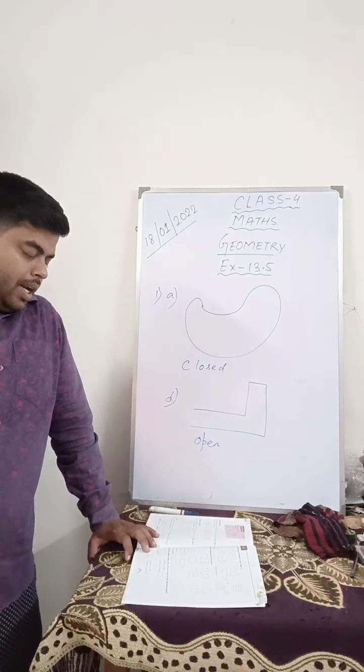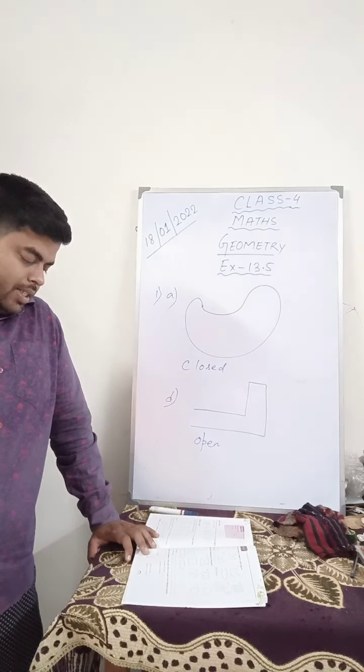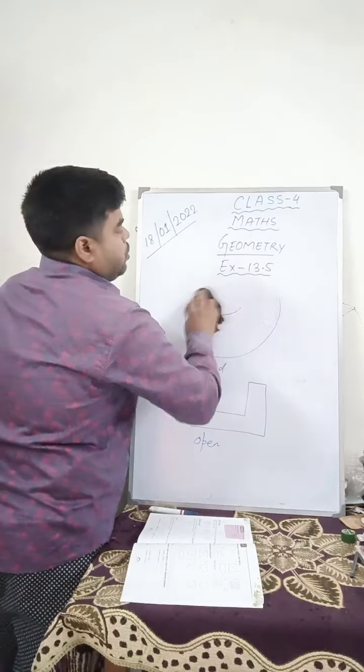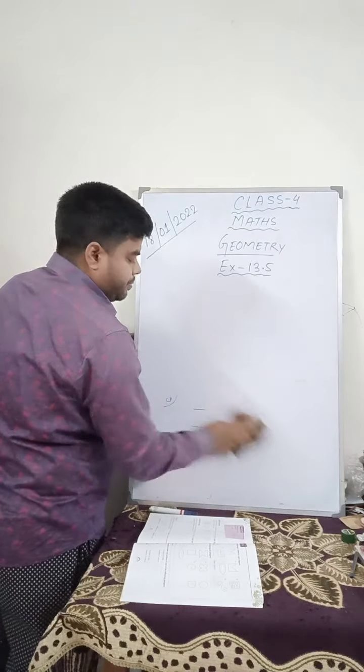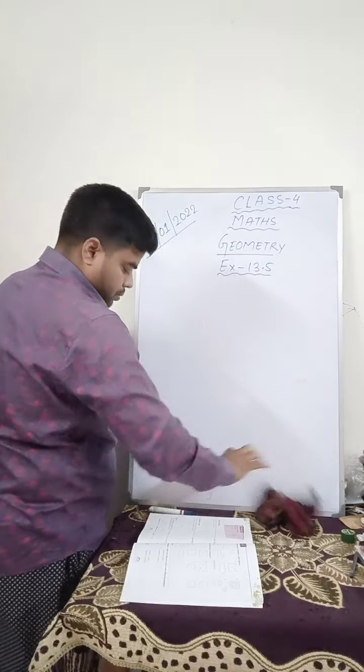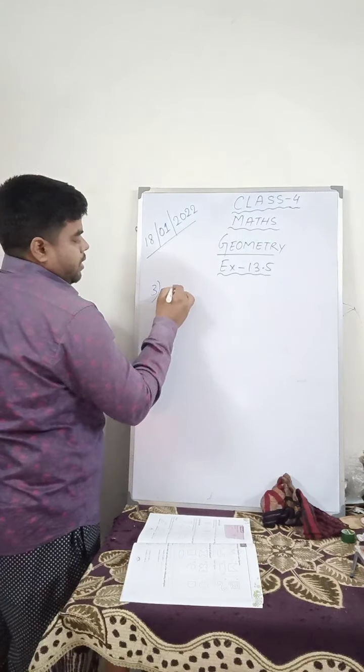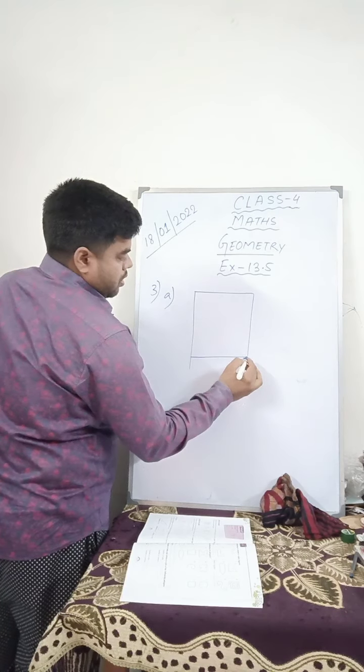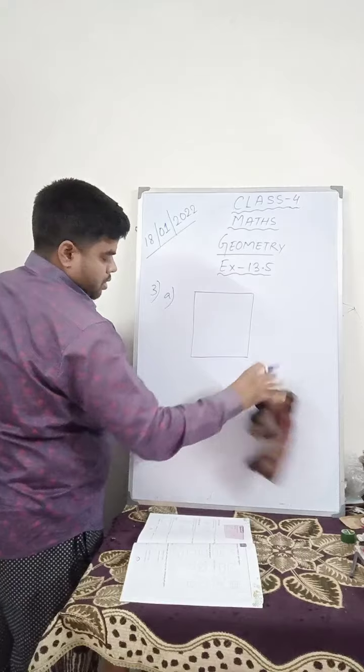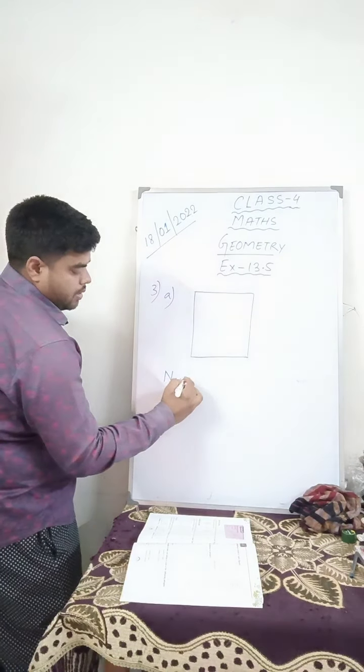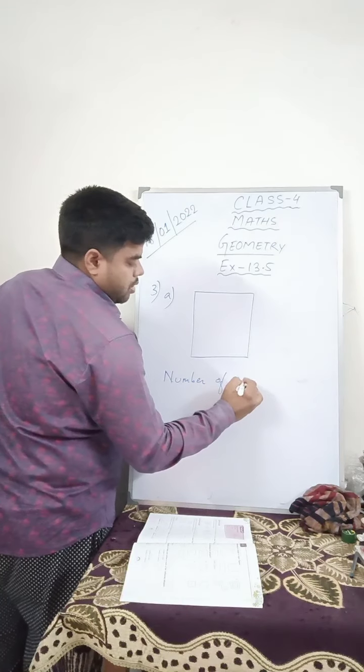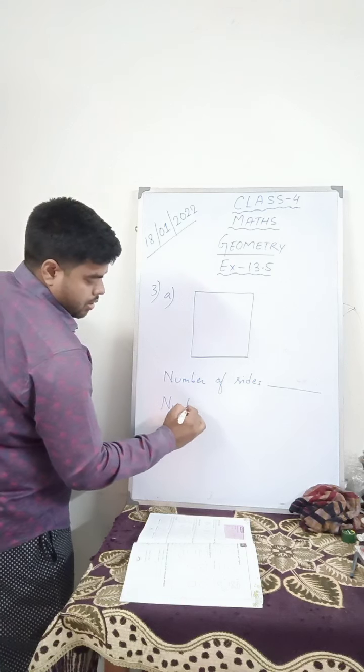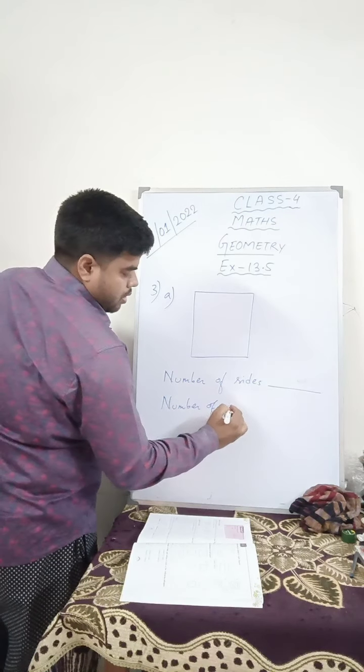Number three, write the number of sides and vertices in each of the following polygon. One I will do for you and another you will do it by yourself. Number three, A. So first they have said number of sides and here number of vertices.